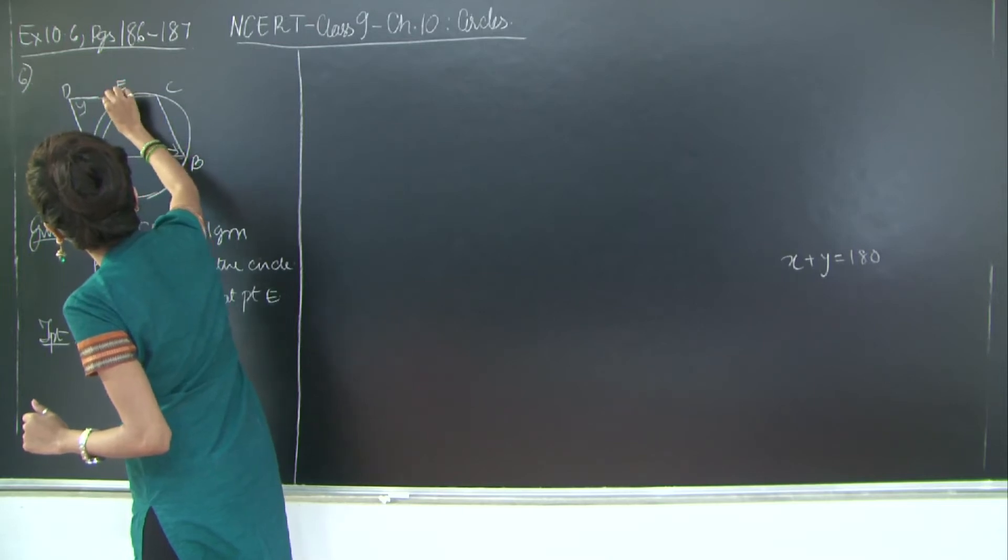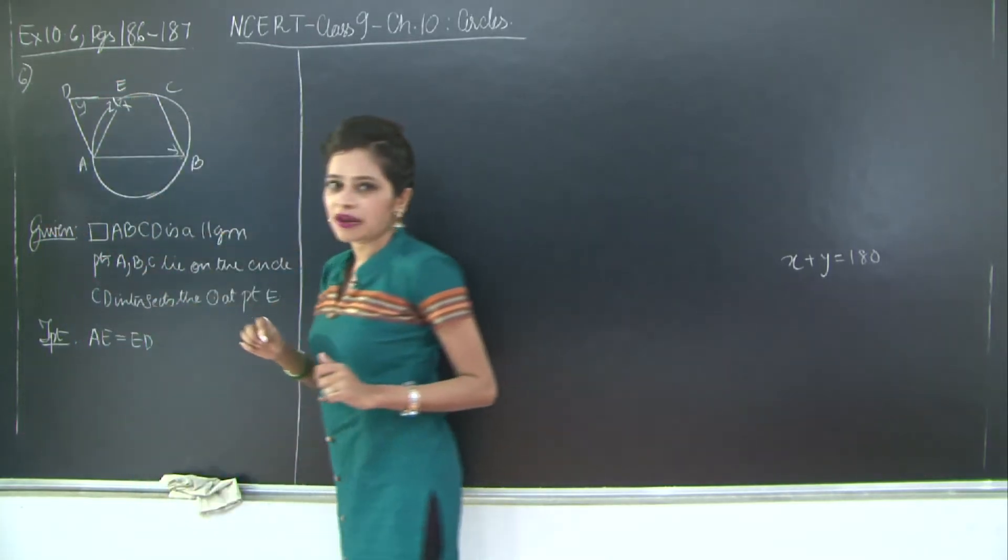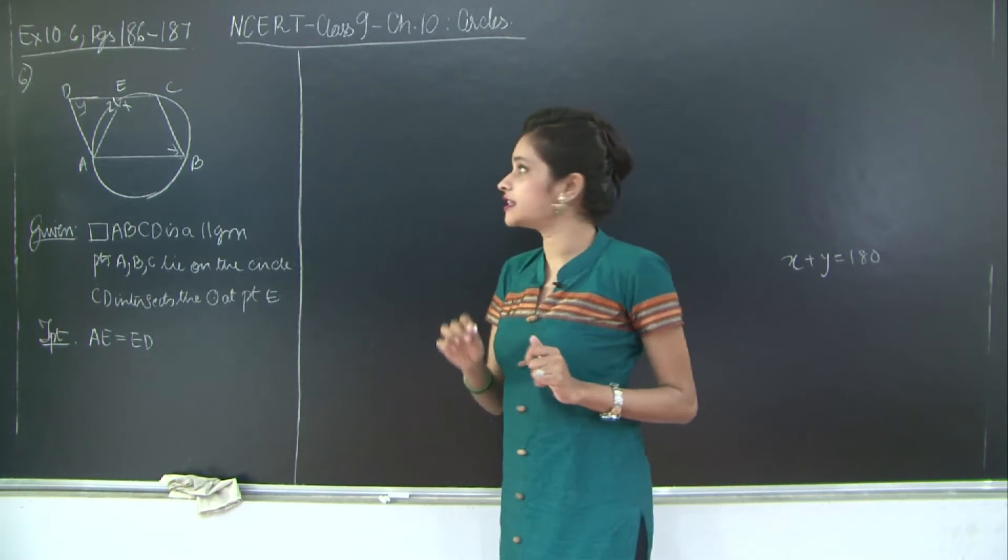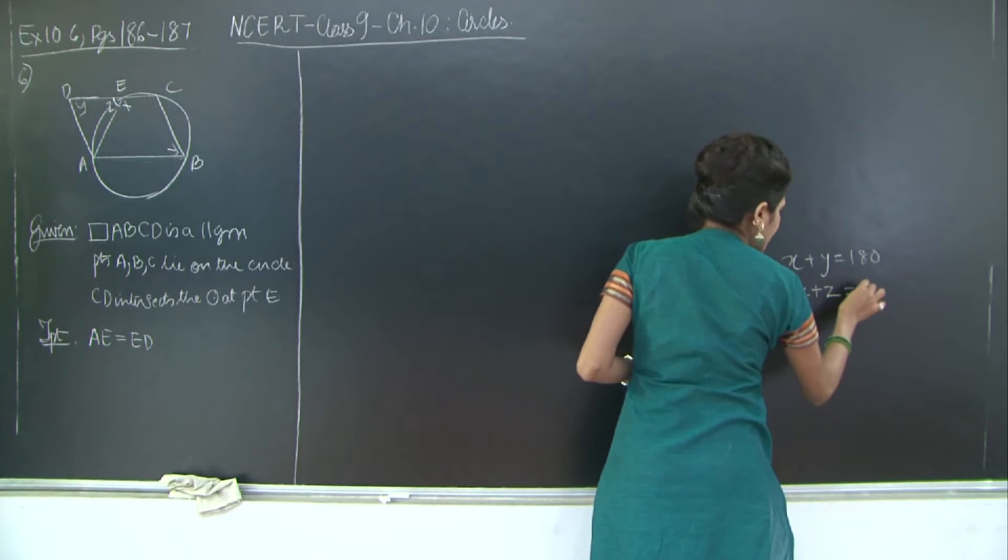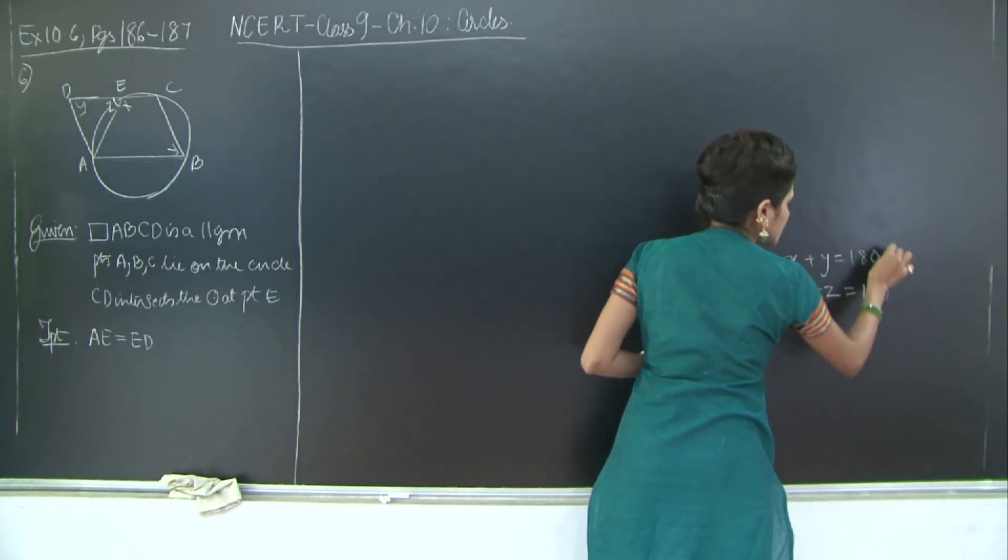So let me just mark this. This angle is z. But x plus z is 180 degrees through the linear pair axiom. So I am saying x plus z is 180 degrees through the linear pair axiom.